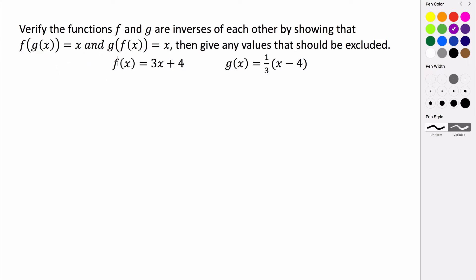And that should be true in both directions. So this is one of those rare cases where f composed with g and g composed with f actually do equal the same value, and that value should be x. And then once we've done that, we're going to talk about any values that should be excluded. We can actually do that part first.